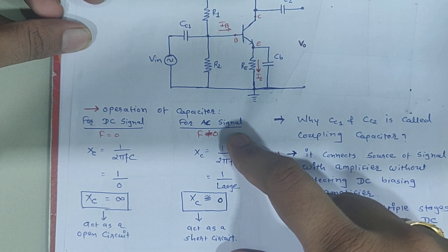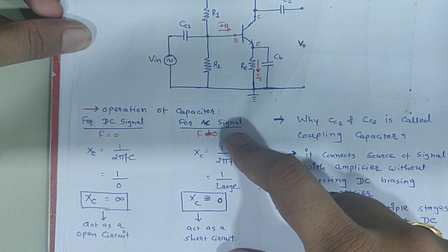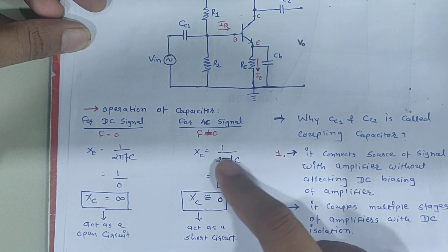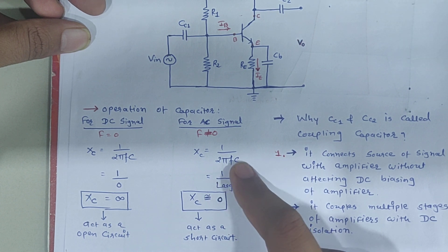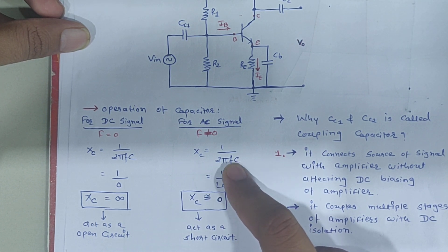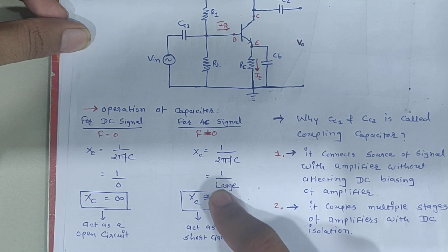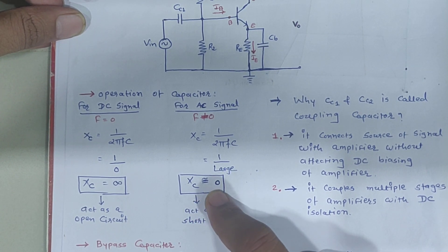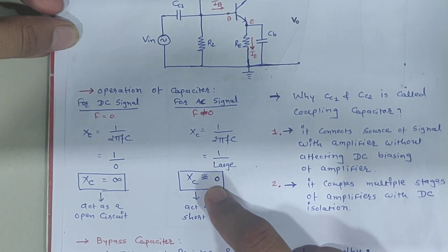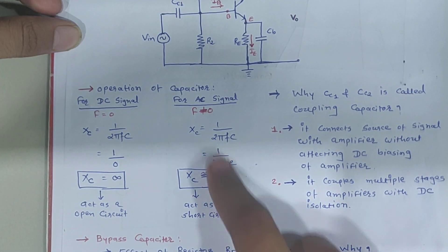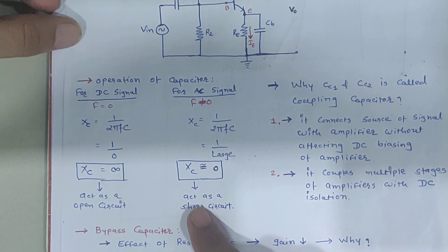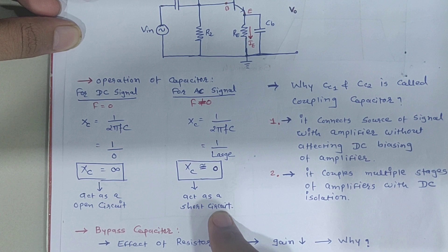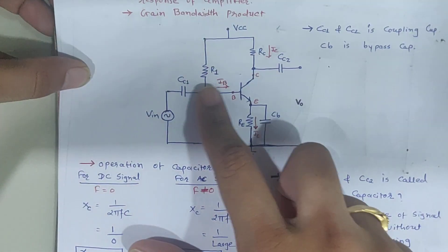For AC signals, the frequency is not zero, so XC = 1/(2πFC). Since the capacitor value is comparatively large and frequency is variable, XC is near about zero. If reactance is zero, the capacitor acts as a short circuit for AC signals.